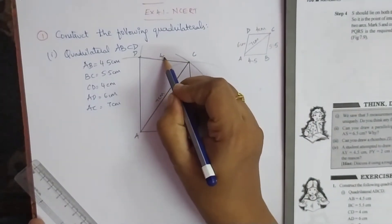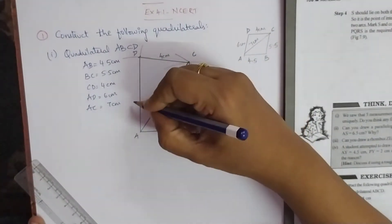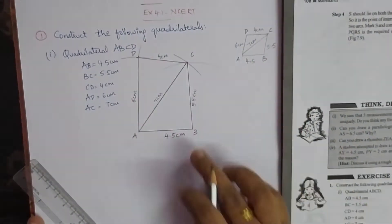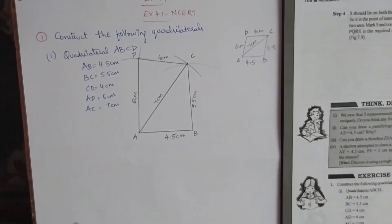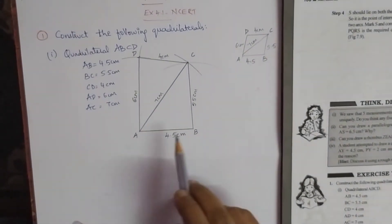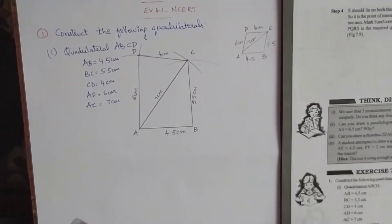Join this point, which is D, and join AD and DC. Write the measurements there: 4 cm and 6 cm. This is the quadrilateral ABCD you should construct. Understood, children?